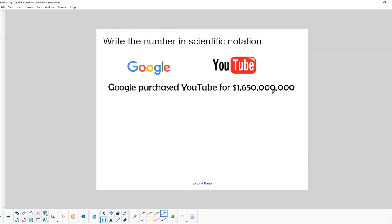Here's an example. Let's say you write the number in scientific notation: Google purchased YouTube for this amount. We've got to move the decimal 1, 2, 3, 4, 5, 6, 7, 8, 9 places. This would be 1.65 times 10 to the positive ninth power because we moved it to the left. We recognize this is a positive number because this is a big number.